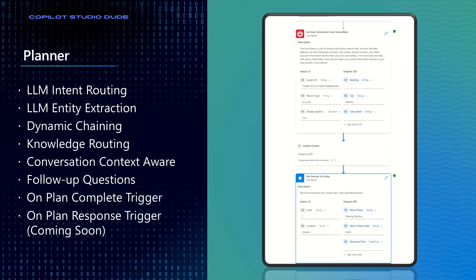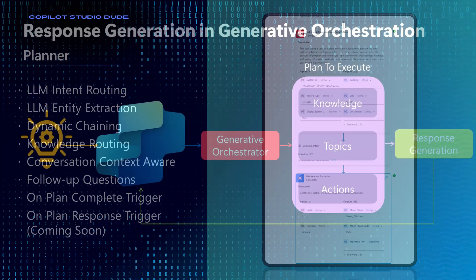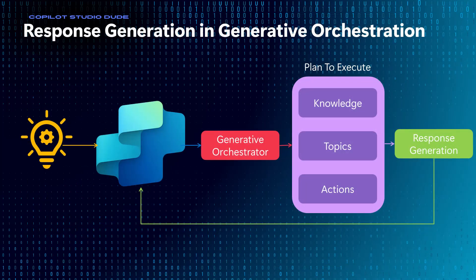The next key concept is the planner. The planner is essentially the large language model being used to figure out how to build a plan and execute it based on the information it has. This is the same generative orchestration engine inside Copilot Studio — we're just doing it autonomously to assess the tools, rather than doing it because someone said something to trigger the plan.